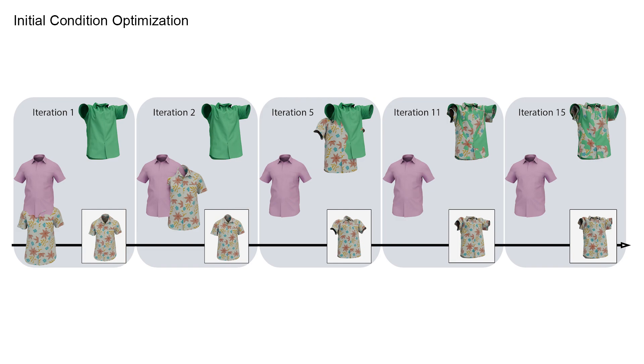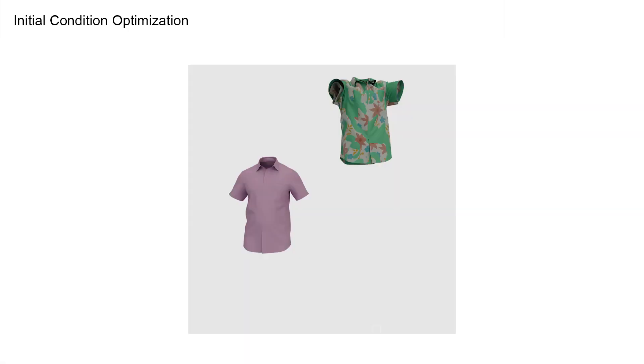Our method also allows us to efficiently estimate initial conditions. Here we estimate the initial velocity per vertex on the shirt. During the first few iterations, the garment simply falls down to gravity. The optimizer quickly learns to recover from this and converges to the right solution. This optimization involves nearly 200,000 degrees of freedom.